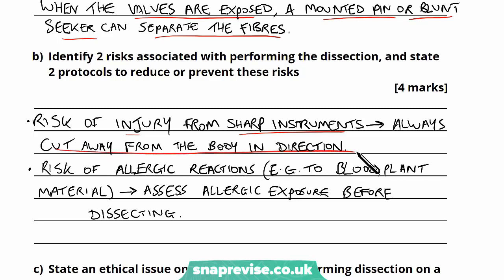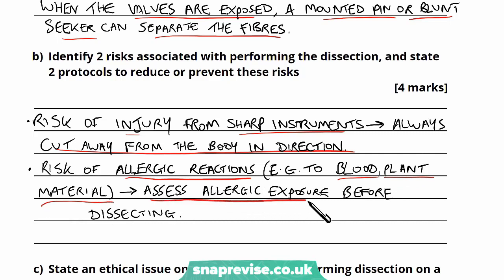It seems like common sense, but it's a very important thing to bear in mind. There are a lot of sharp instruments and dangerous fluids, and you're concentrating so hard on the dissection that it's easy to make a mistake. The second risk is allergic reactions, which we referred to in the previous video. This could be to blood or plant material — if you're dissecting a rare flower, it might have pollen that could be harmful. So it's always important to assess your allergies before you begin dissecting.